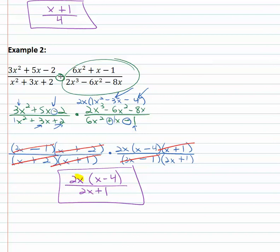I want to notice we can't divide out the 2x's because of the plus separating the 2x from the 1. So that's going to have to be it for our final solution. Multiplying and dividing fractions, factor everything and divide out common factors.